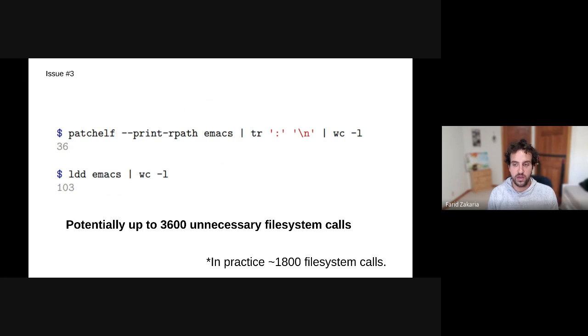This provides a worst case scenario where if all dependencies are found in the last directory, it causes a lot of unnecessary file system calls. Hypothetically 3,600 as I've written on the slide. In practice it's actually a bit less, however, still significantly high, 1,800 file system calls, which can be pretty disastrous if these paths are on a network file system, for instance, and they have negative caching disabled.